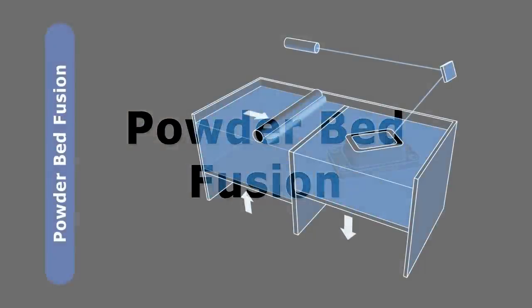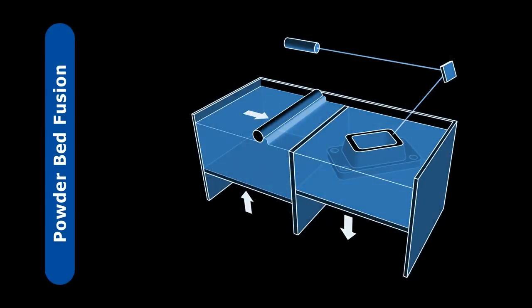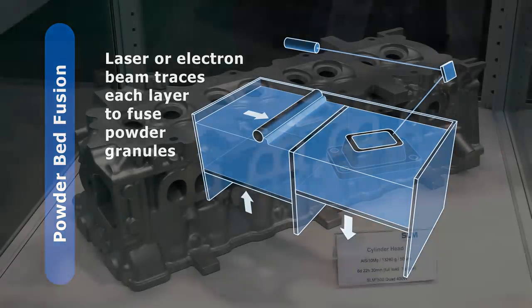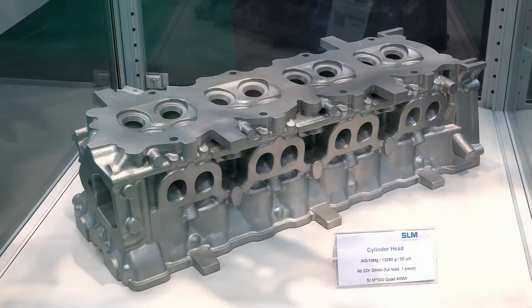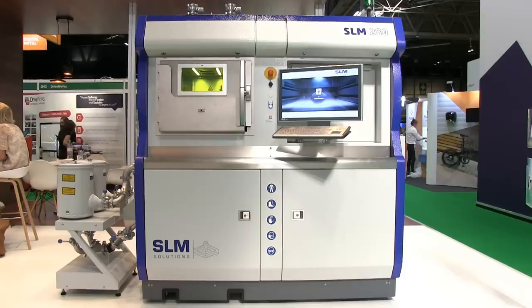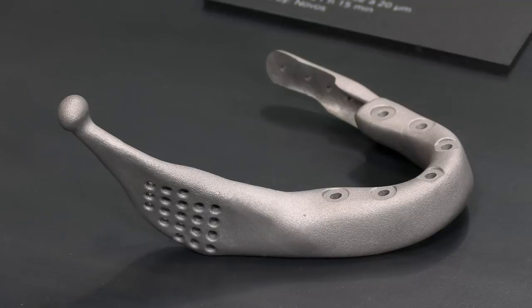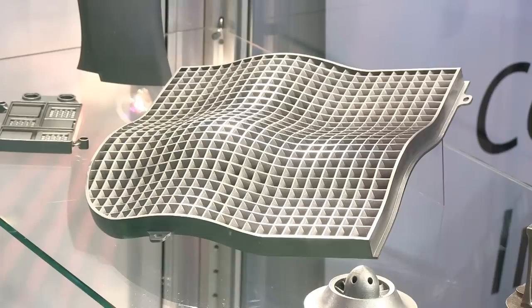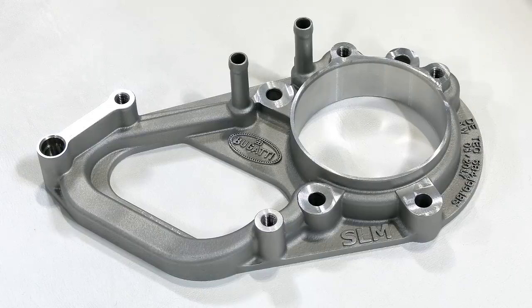A second technology that uses a roller or blade to scrape a layer of powder across a print bed is powder bed fusion. Here powder granules are fused together with heat, with each object layer outlined by a laser or electron beam. This allows very high quality plastic or metal objects to be produced, with large powder bed fusion 3D printers now increasingly used to make parts for aeroplanes as well as custom medical devices. The quality of the output from direct metal powder bed fusion is now very impressive indeed and is opening up all kinds of new manufacturing possibilities.